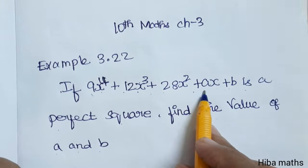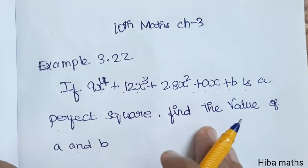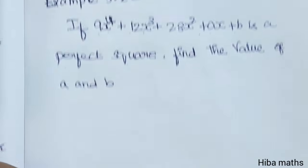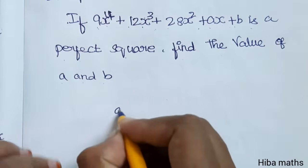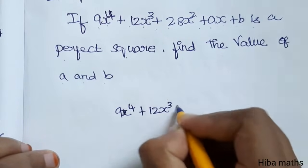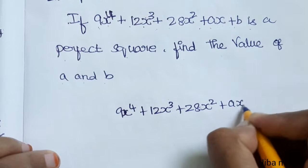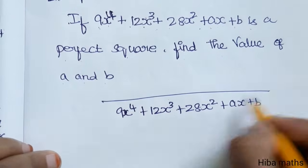a is constant, b is constant. So let's find the perfect square and find the value of a and b. Now let's do a long division method. 9x⁴ + 12x³ + 28x² + ax + b.